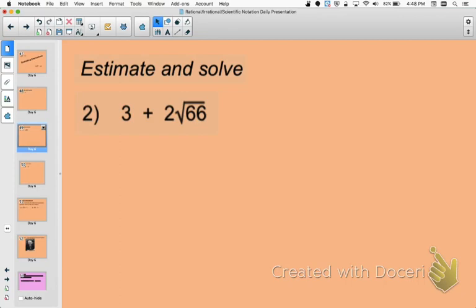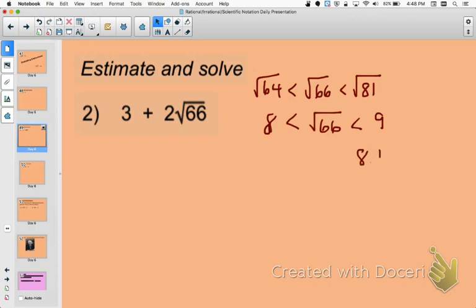But I also know that 66 is much closer to 64 than it is to 81. Okay, because of that, my estimate is going to be much closer to 8 than it is to 9. Okay, I'm going to start with 8.1 since they are so close together. And I'm going to do 8.1 times 8.1.